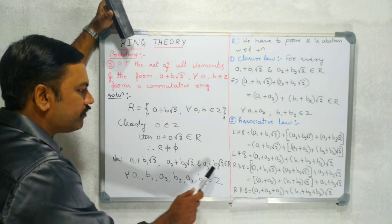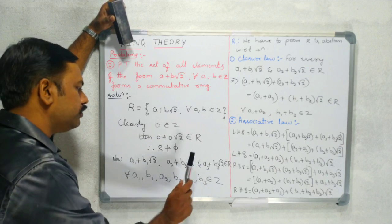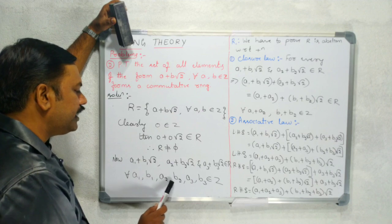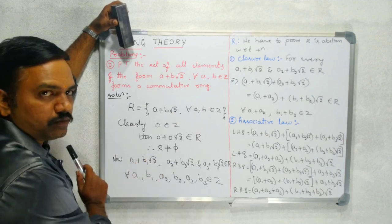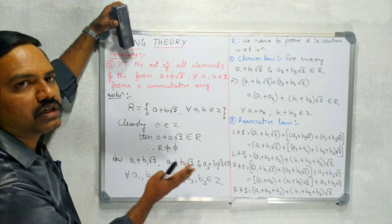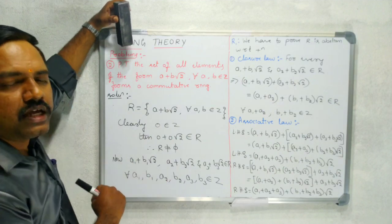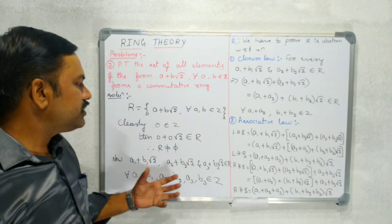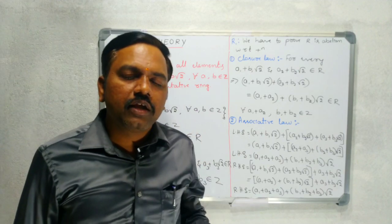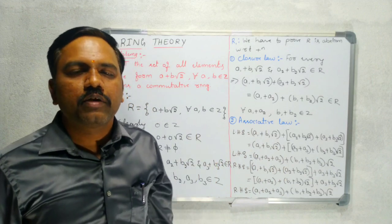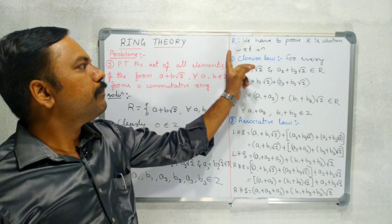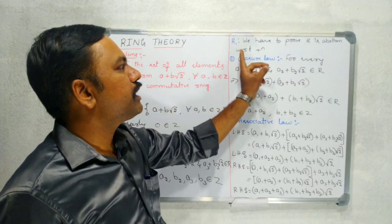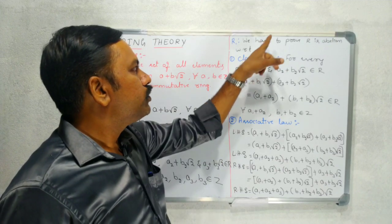Next, I consider three elements of R: A1 plus B1 root 2, A2 plus B2 root 2, and A3 plus B3 root 2. Clearly A1, B1, A2, B2, A3, B3 are all integers. To prove R is a commutative ring, first we have to prove that R is an abelian group with respect to addition. To prove R is an abelian group, first we have to prove it satisfies the closure law.